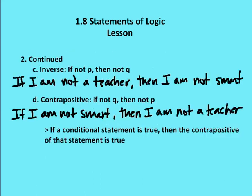There are two other parts of statements of logic. The second is the inverse. The inverse is: if not P, then not Q. So if I am not a teacher, then I am not smart. And finally, the contrapositive, which says: if not Q, then not P — so if I am not smart, then I am not a teacher.